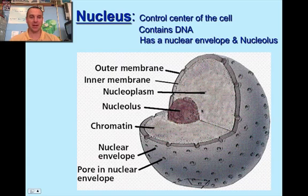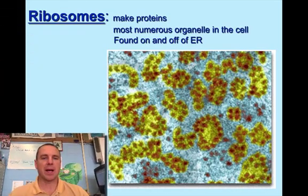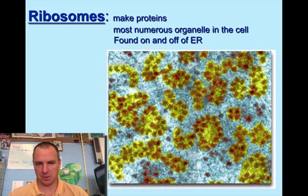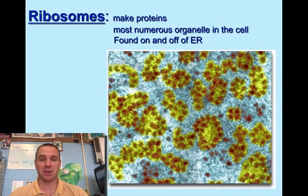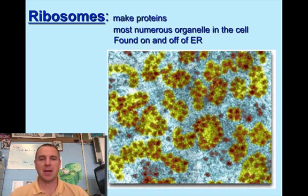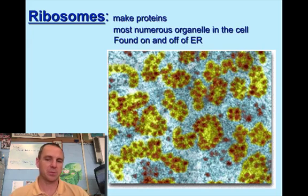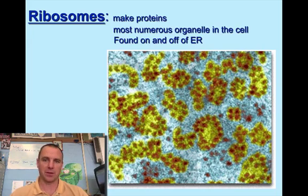So the nucleolus is where ribosomes are made — that's the nucleus. Ribosomes are one I will ask you every day if you come to plus period. Ribosomes make proteins — that's their main function. There are more of them in the cell than anything else, so they're the most numerous organelle. And they can be found on or off the ER. The ER is short for endoplasmic reticulum. If they're found on the ER, it's called rough ER. If they're found off the ER, it's called smooth ER. But ribosomes make protein.